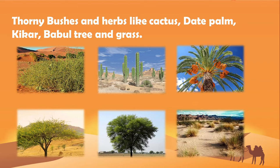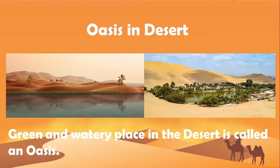Let us discuss about oasis. A green and watery place in the desert is called an oasis. Oasis is an area in a desert where there is water and plants. People live near the oasis where water is easily available.